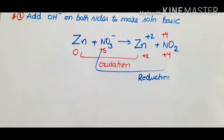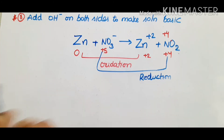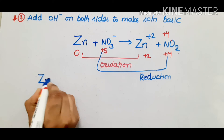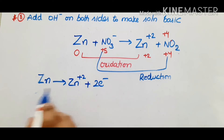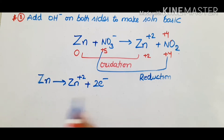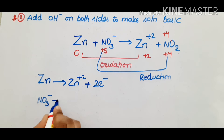Oxidation and reduction depend on the transfer of electrons. For the half reactions: the oxidation half reaction is Zn → Zn²⁺ + 2e⁻ (zinc releases 2 electrons). For the reduction half reaction, NO3⁻ gains electrons. To balance oxygen, add H2O. Then add H+ to balance hydrogen. Then balance the charge.